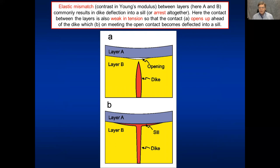Elastic mismatch — contrasting Young's moduli between layer A and layer B — often favors deflection of the dike into a sill along the contact, particularly if layer A has a high Young's modulus and layer B has a comparatively low Young's modulus. This is shown alongside the effect of contact opening, namely Cook-Gordon delamination: in figure (a) the dike is approaching the contact, and in (b) it has become deflected along the contact as a sill.